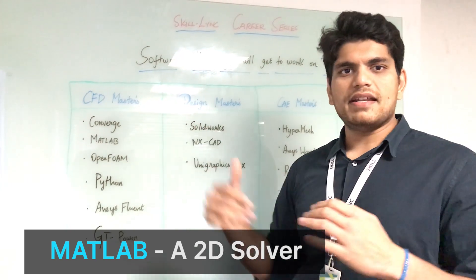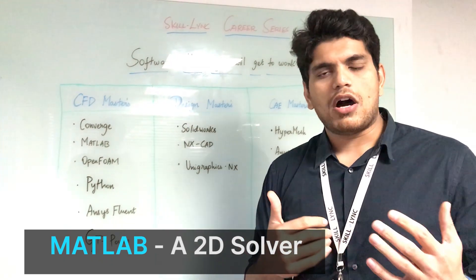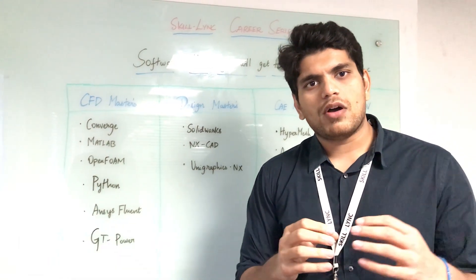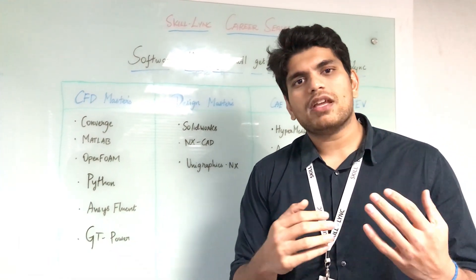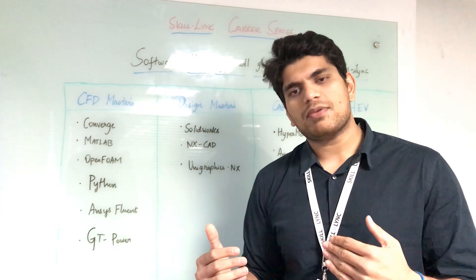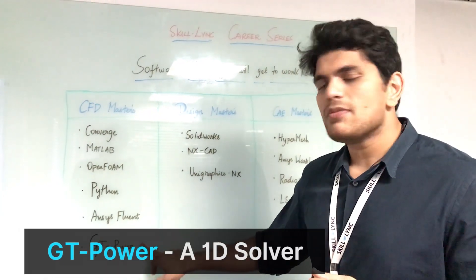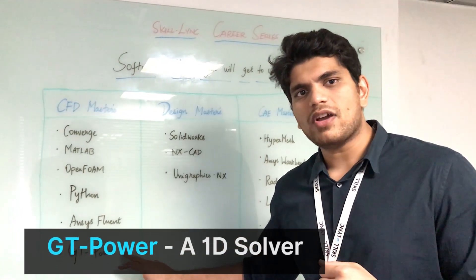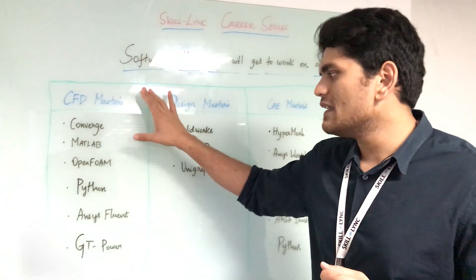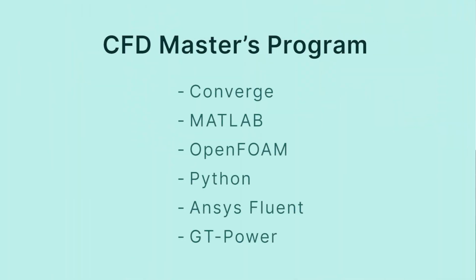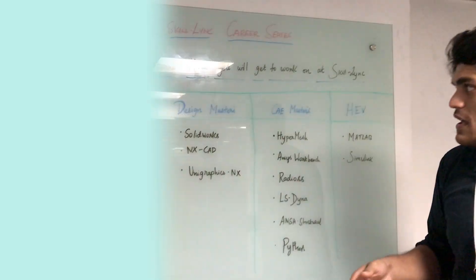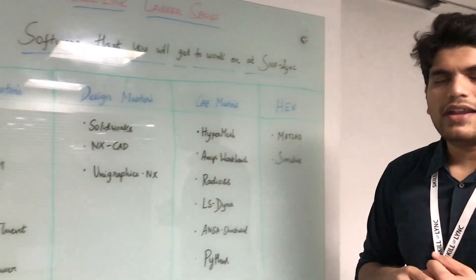MATLAB is a 2D solver where you will understand how to create a solver by solving a few governing equations. GT-Power is a 1D simulation software. These are the different skills that you can learn, for example, if you enroll in a CFD Masters course.